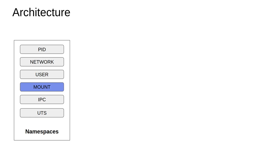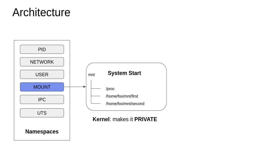The way the mount namespace works is there might be multiple mount points that the kernel launches at the beginning of the system. All of them are started in something called a private mode. When the system starts, there are multiple mount points — some created by the system admin, some by the shell. The kernel makes all the mount points private, meaning they will not be available in any other namespace created during the course of the application.